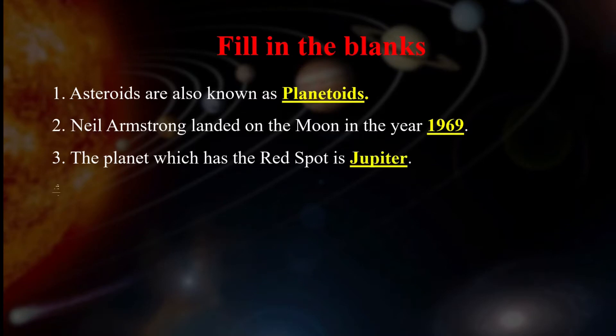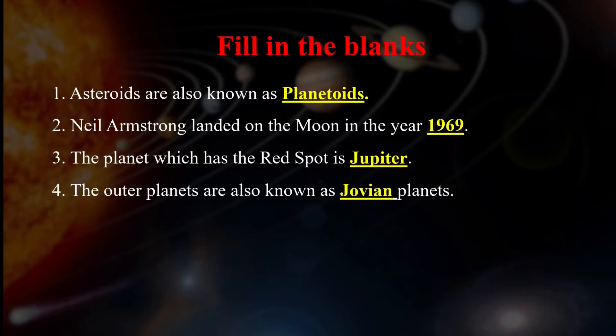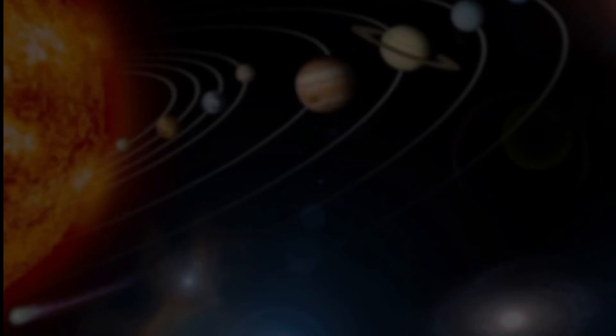Next, the planet which has a red spot is Jupiter. Jupiter has a red spot on it. Next, the outer planets are also known as Jovian planets. The Jovian planets are Jupiter, Saturn, Uranus, and Neptune.